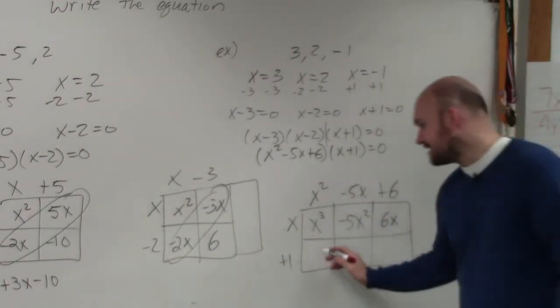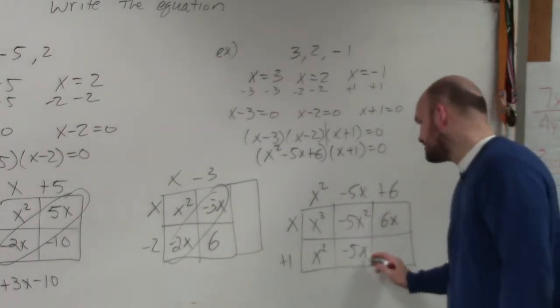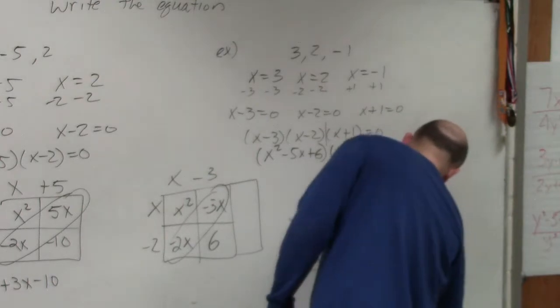x squared times 1 is x squared. 1 times negative 5x is a negative 5x. And 1 times 6 is a positive 6.